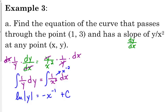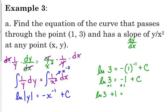They give us a specific condition. It goes through the point (1, 3). So let's plug that condition in. 3 is our y, 1 is our x. That negative 1 exponent just puts that in the denominator. So 1 to the negative 1 is still 1. That's the natural log of 3 equals negative 1 plus c. So the natural log of 3 plus 1 is our c.